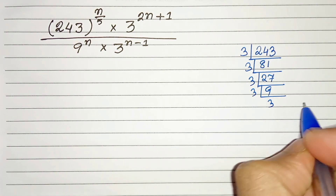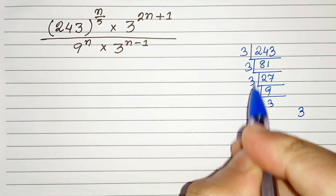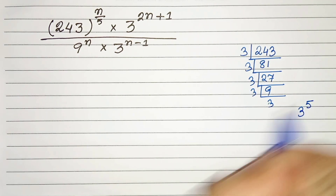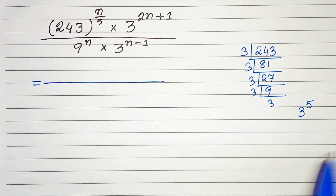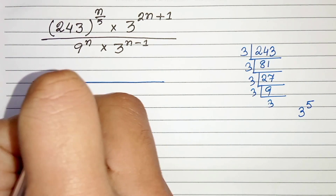So, 243 can be written as 3 raised to the power 1, 2, 3, 4, 5 — that is, 3 raised to the power 5. So 243 can be written as 3 raised to the power 5.